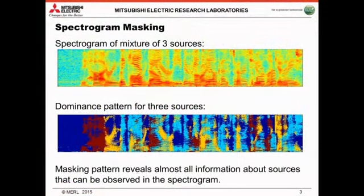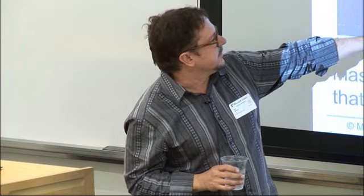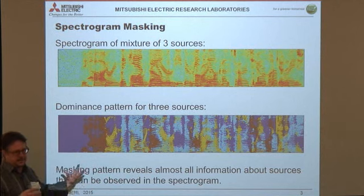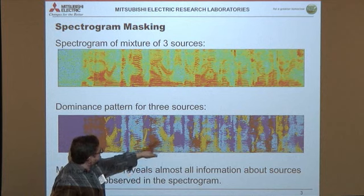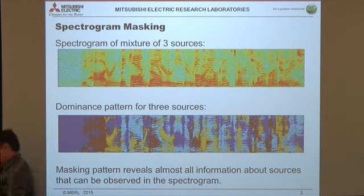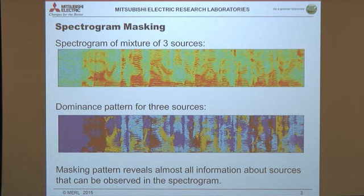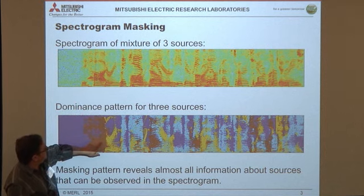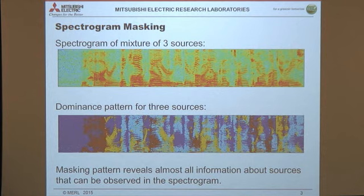So to motivate why we care about masks: if you knew that mask, the observations under one part of the mask represent the source that mask corresponds to, and those observations are essentially very accurate. Once you have the mask, you really have all the information that the spectrogram contains about each of the sources. There is no other information because the obscured stuff is gone. Taking that to a spectrogram of three sources, the oracle masking pattern shows where each of those sources dominates in time and frequency — it's kind of intricate, and they overlap in intricate ways.